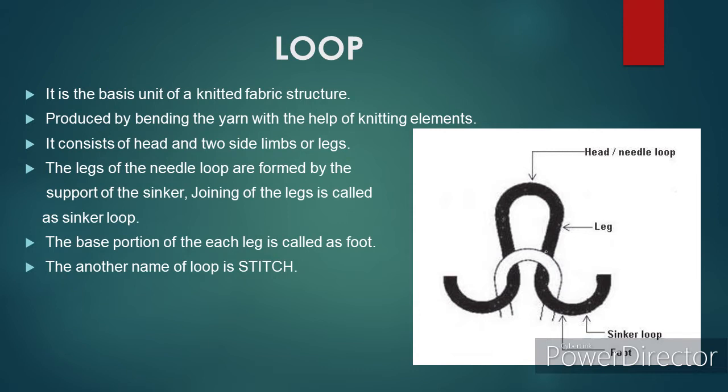A needle loop is a portion of the whole loop in the fabric formed initially by the needle hook. It consists of a head and two side limbs or legs. The sinker loop is the piece of yarn which joins one needle loop to the next. That is, it is obtained when the legs of two adjoining needle loops are joined together. As the legs of needle loops are formed by the support of the sinker, the joining of legs is called sinker loop.